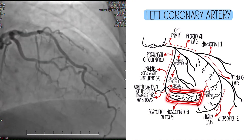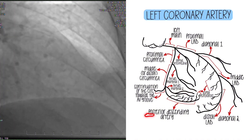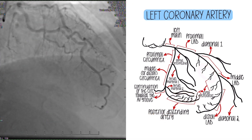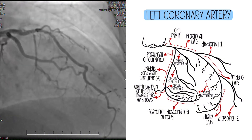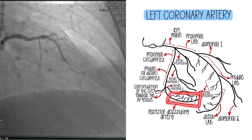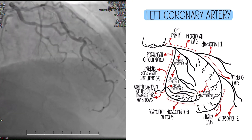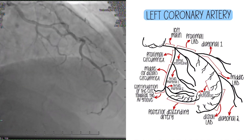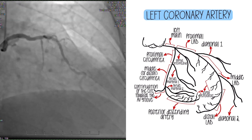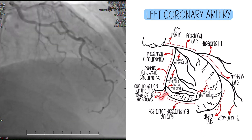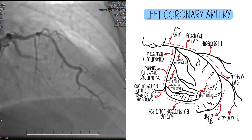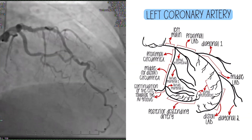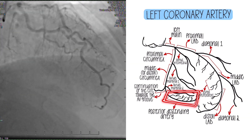Not everybody has this, but lastly is the PDA — posterior descending artery. By definition, the PDA has these little septal perforators, but it's not the LAD because it's a completely different vessel. The PDA is a branch off either the RCA, which we'll talk about in a different video, or if it comes off the circumflex. That is the PDA with septal perforators. This is kind of a classic dominant left coronary artery because the PDA comes off of the circ — meaning this left coronary artery feeds a large territory of the myocardium of the heart.